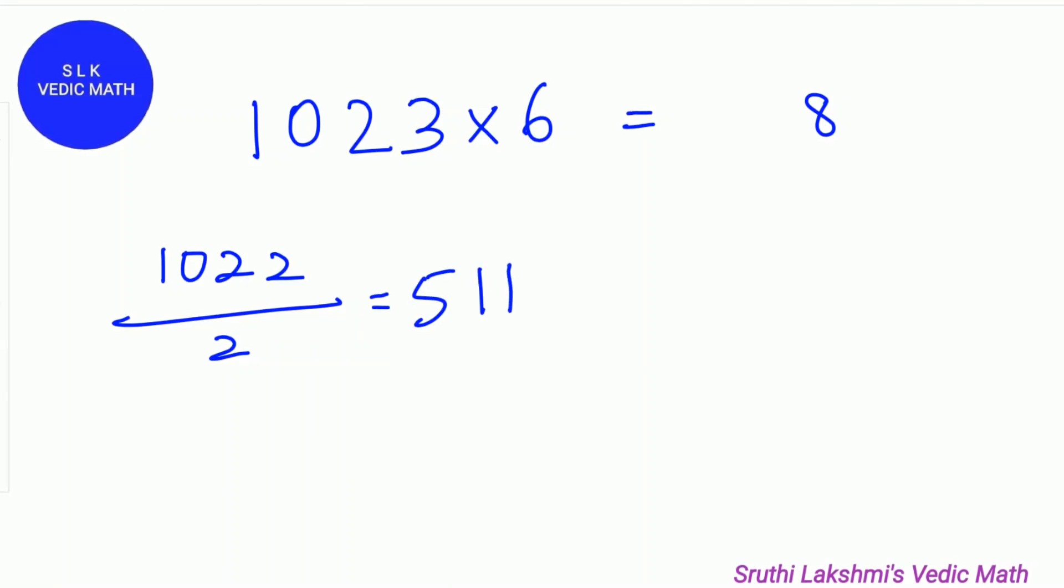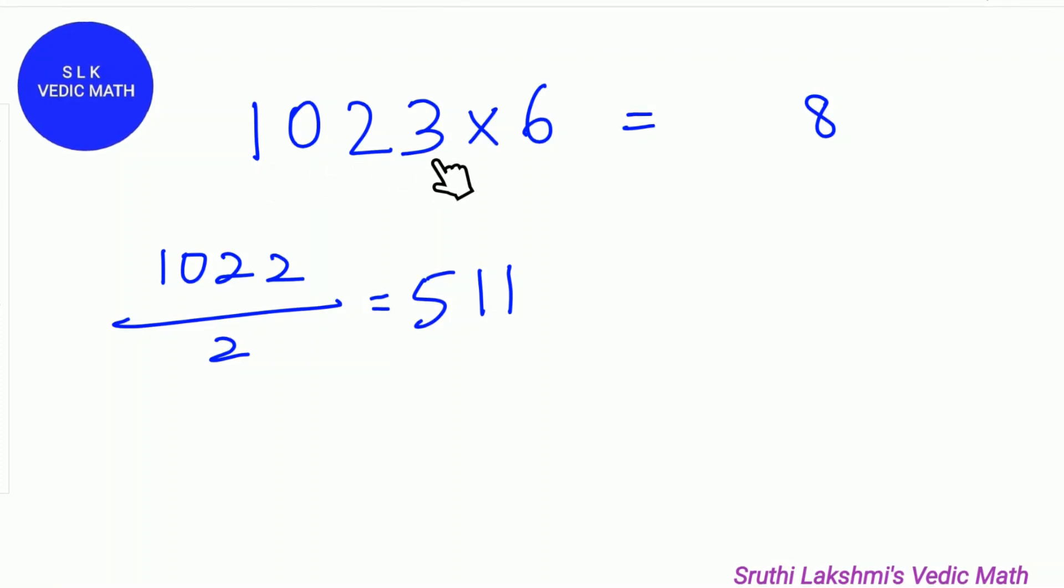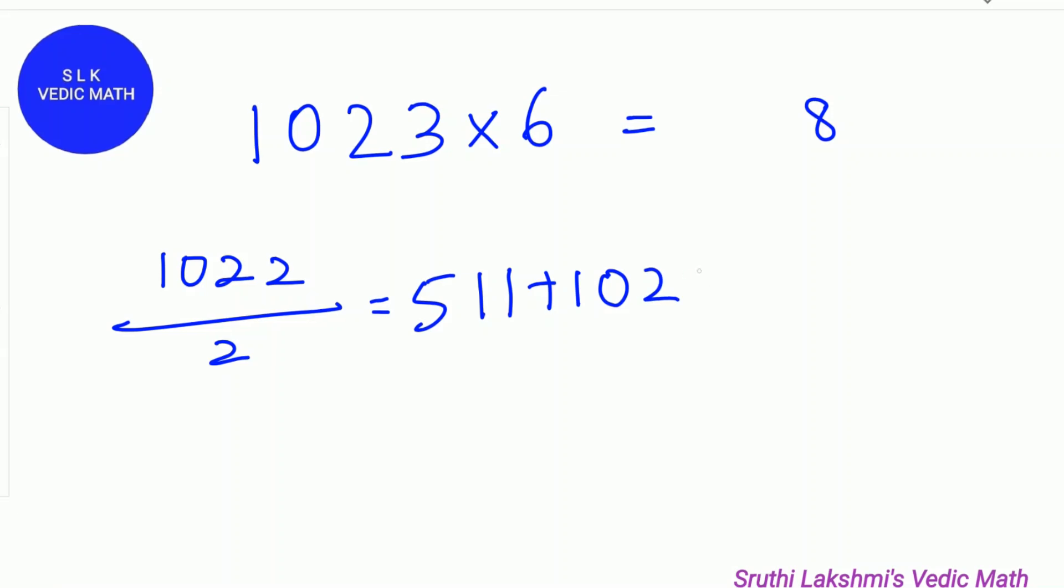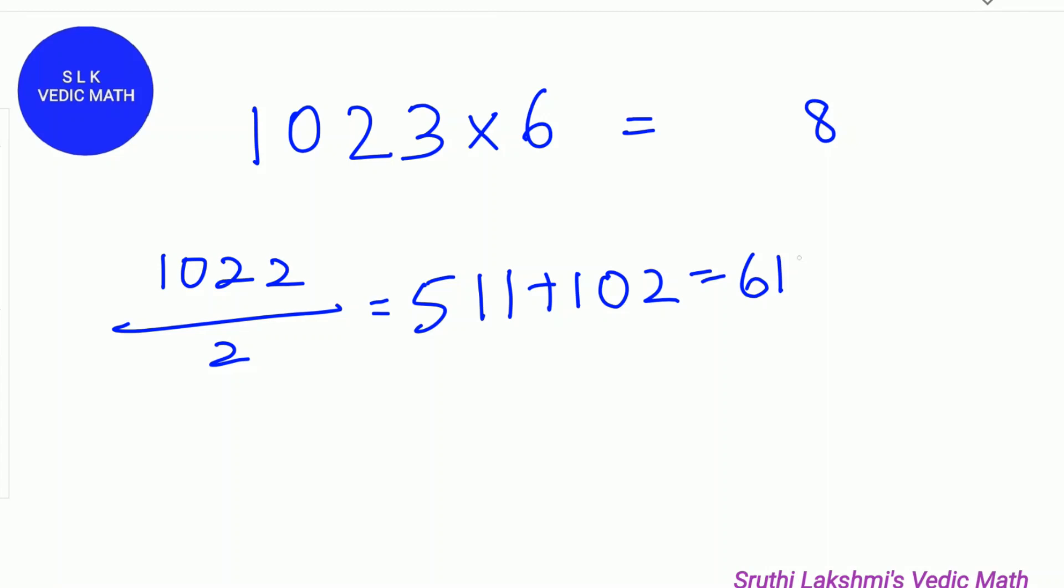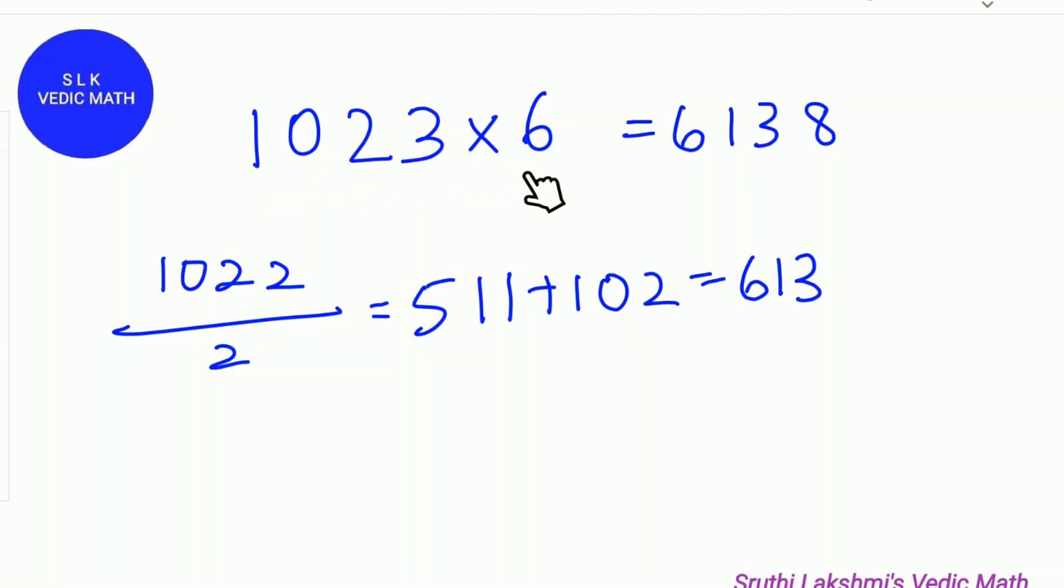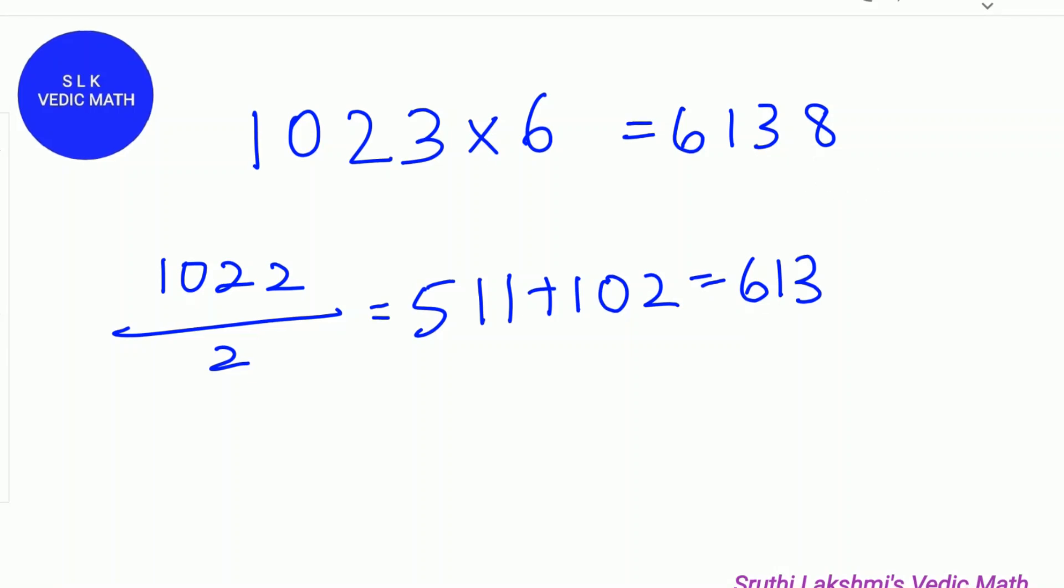Next, we add the other digits except the last digit which is 3. So we add 511 plus 102. 511 plus 102 is 613. We write 613 over here. So 1023 times 6 is 6138.